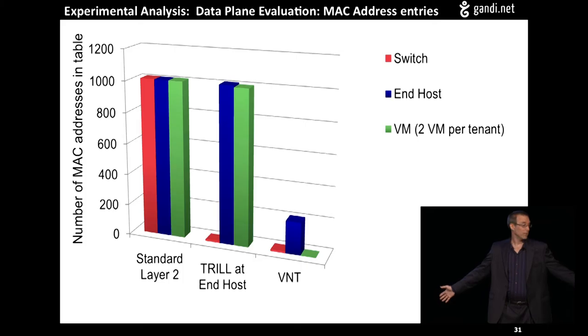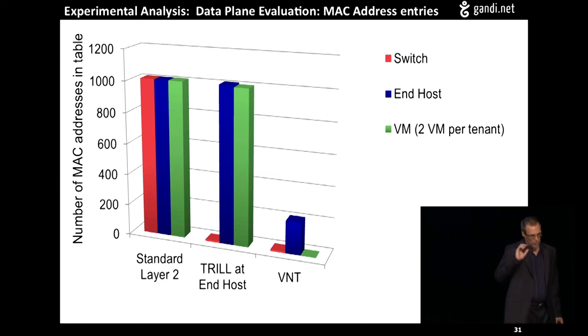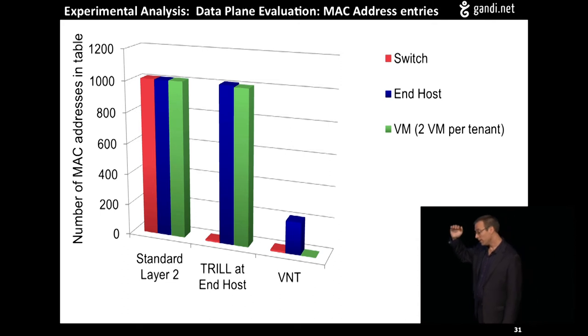So if you just use TRILL, just TRILL, you pretty much knock out the top-of-rack switch overload problem, right? I mean, it's a very low number of MAC addresses at the switch. But if you use VNT with the automatic topology building and the cutting down of the ARP broadcast, you actually drop those broadcasts and unencapsulated packets way down at the hypervisor node and the VM as well.